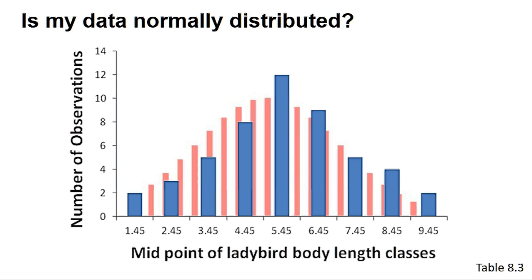However, many programs have several other tests to determine if your distribution could be normal. In this screencast, we will outline the use of the Shapiro-Wilk test, which is the most accurate test for small sample sizes. Again, a significant result indicates that your data is not normally distributed.